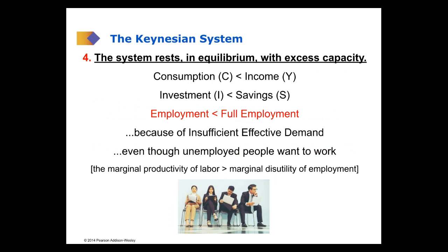Consumption would be less than income because the marginal propensity to consume was less than one. Investment would be less than savings because businesses didn't want to invest all they could, knowing that consumers were not going to consume all they could. As a result, the employment level would be less than full employment. All of this was because of an insufficiency of effective demand — when people aren't demanding and consuming as much as they could, and not investing as much as they could, there's an insufficiency of effective demand. This was true even though unemployed people wanted to work.